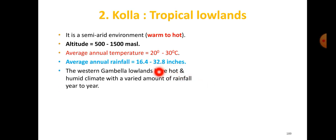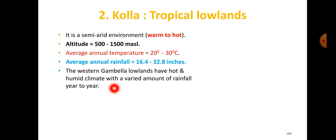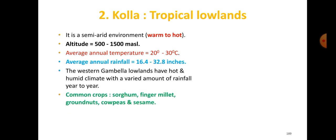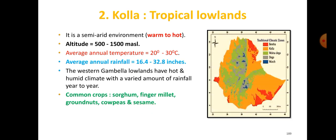The western lowlands have a hot and humid climate with varied rainfall year to year. Common crops grown in the Kolla zone include sorghum, finger millet, groundnuts, cowpeas, and sesame.